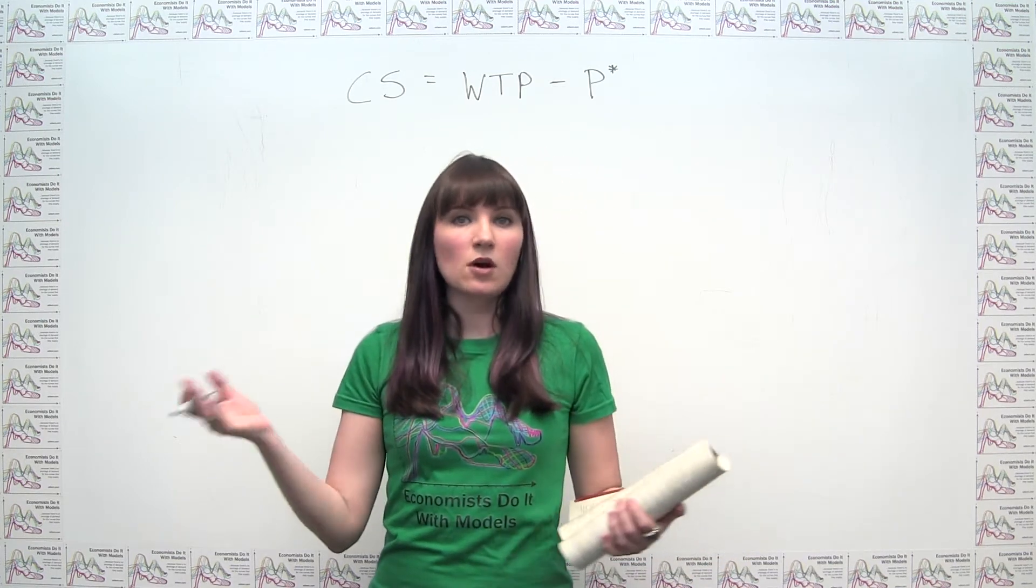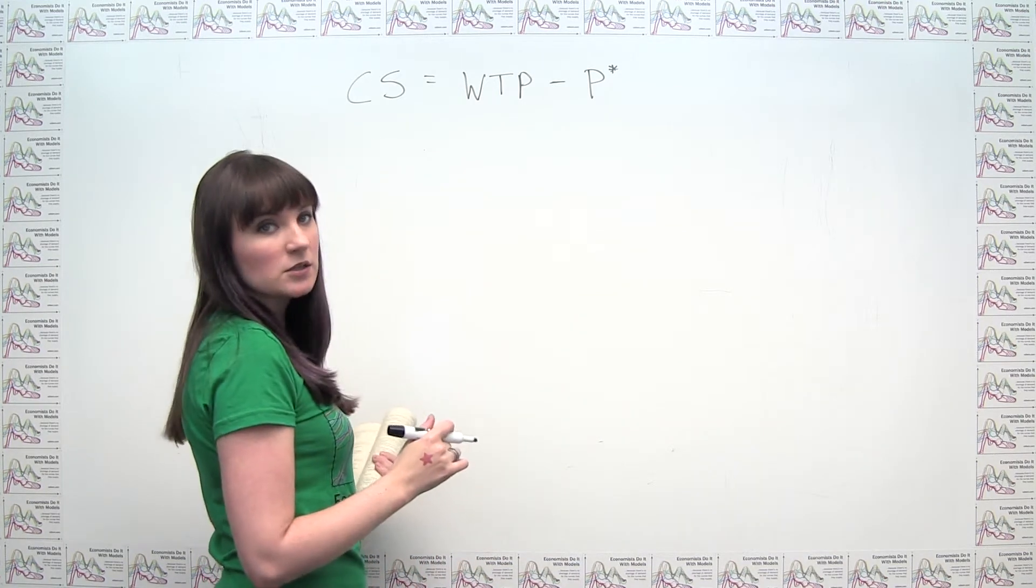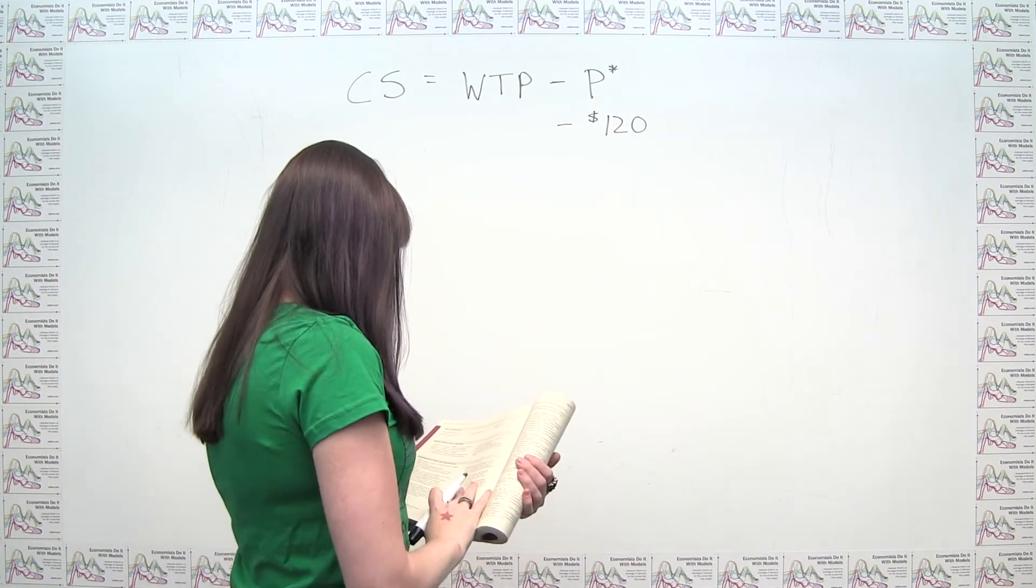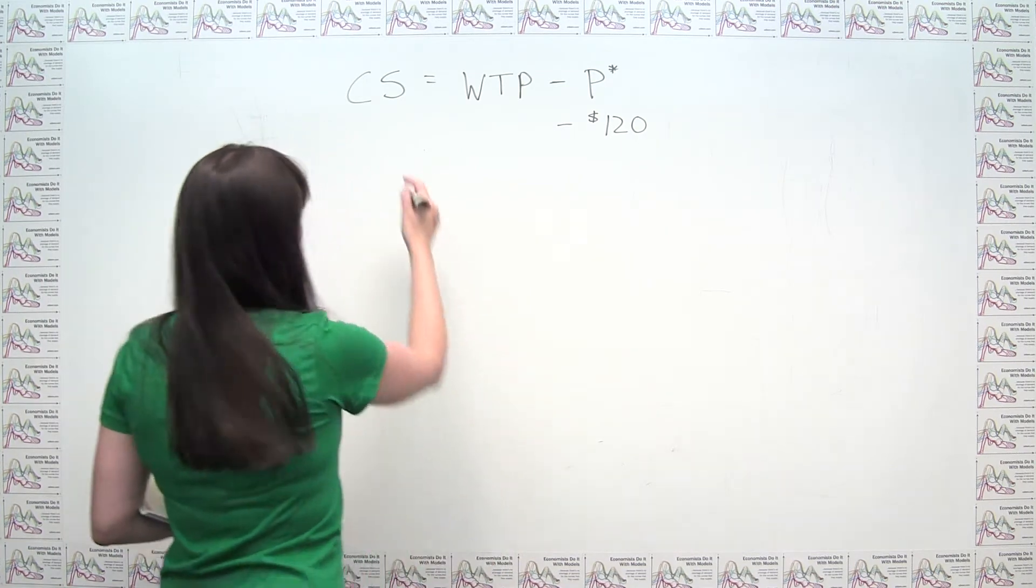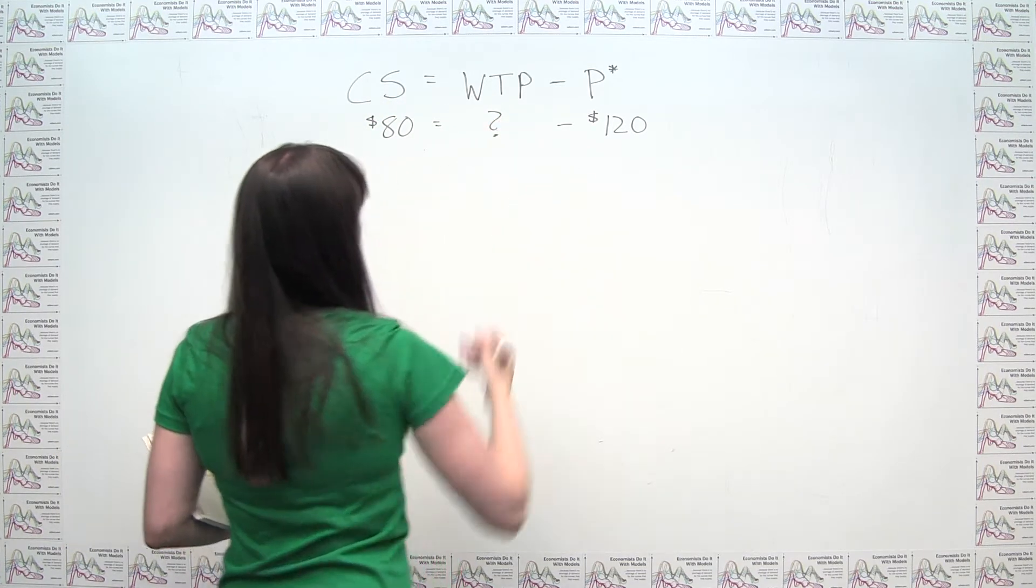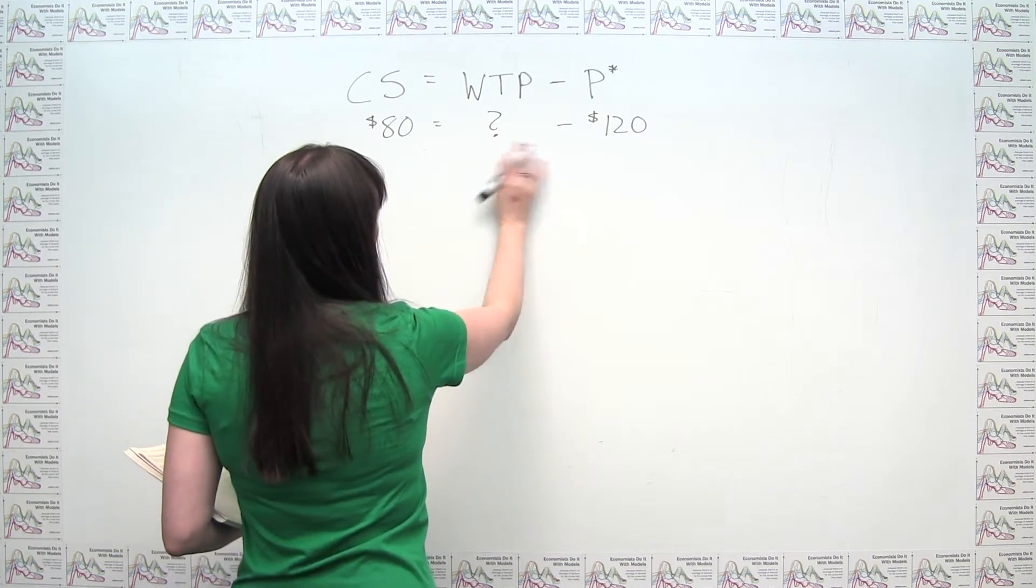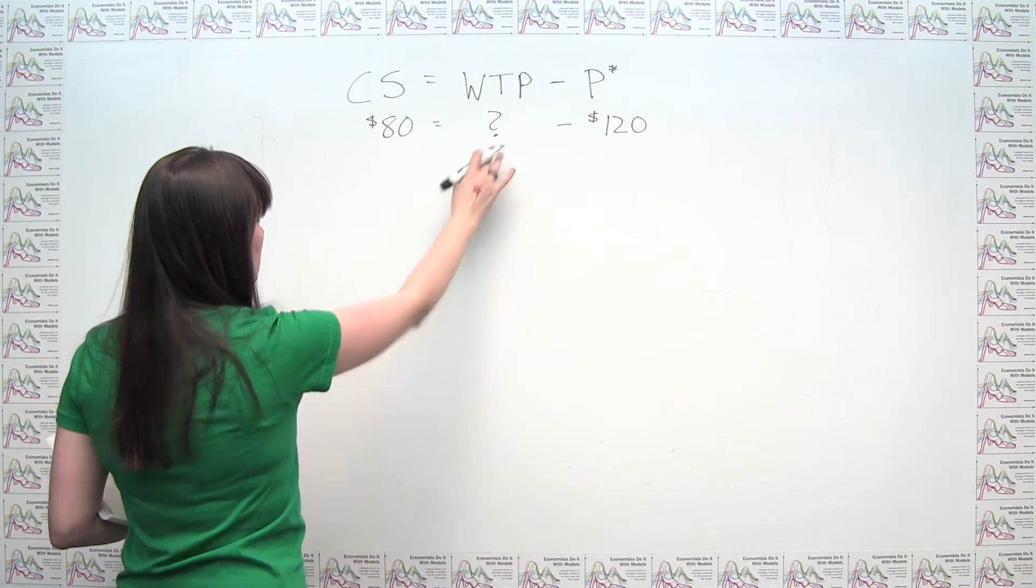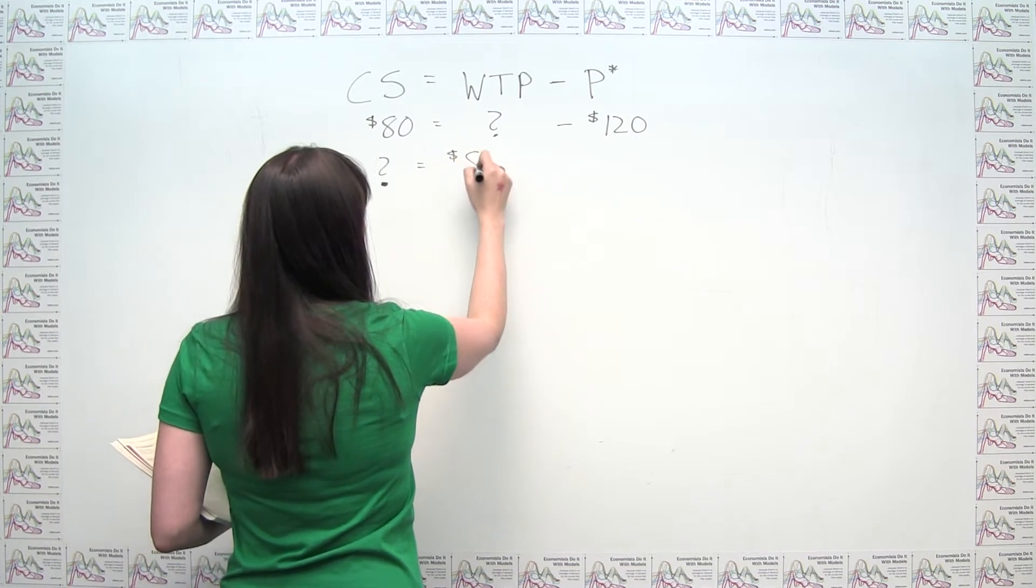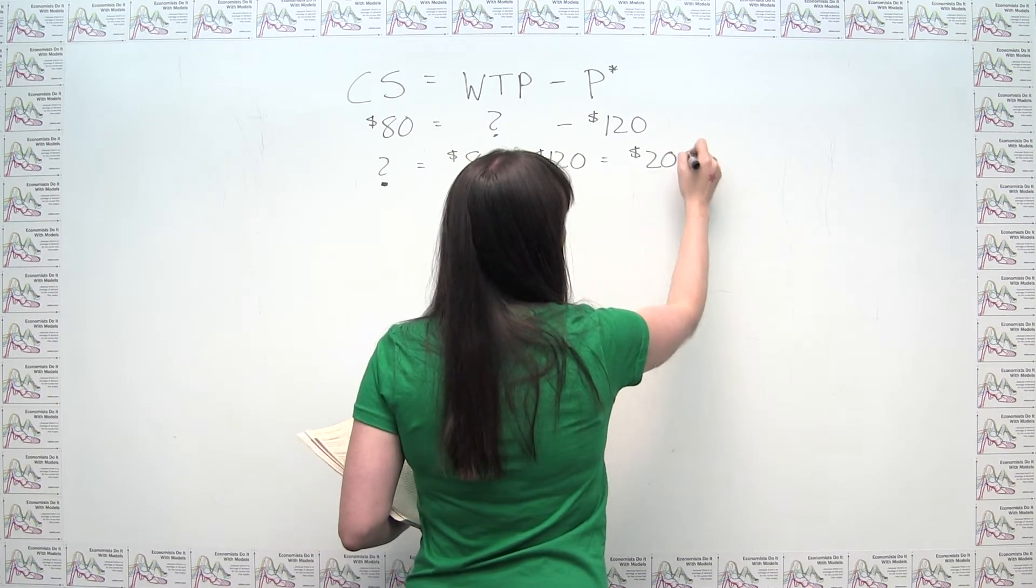So we can plug in what we know and then just solve for what we don't know. So again, it says Melissa buys an iPod for $120. So it must be the case that this price is $120. And she gets consumer surplus of $80. So it must be the case that this guy here is $80. And then the willingness to pay is what the question is asking for. So we can just do some simple algebra here. We can just add $120 to both sides and we get that our willingness to pay is equal to $80 plus $120, or namely $200.